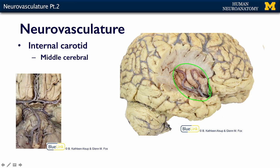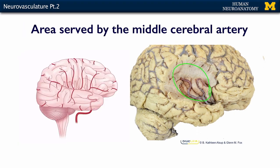The middle cerebral artery feeds almost the entire lateral surface of your brain. Here we can see the insula, the internal carotid, the middle cerebral artery coming up behind the temporal lobe from the base of the brain, with insular branches coming out onto the surface.